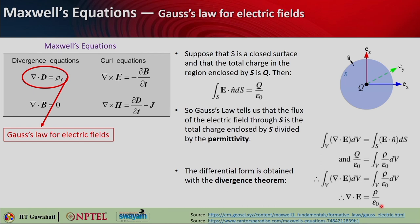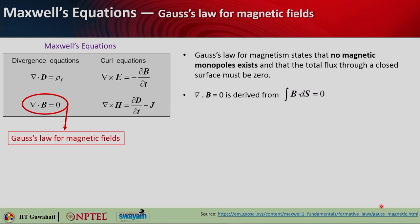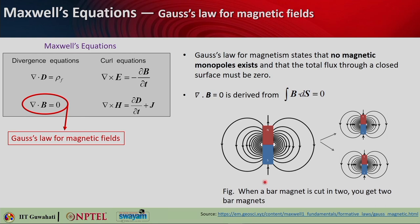Gauss law for magnetism states that no magnetic monopole exists, so the total flux through any closed surface must be zero: del·B = 0. The integral of B·dS over a closed surface equals zero. If you break a bar magnet, even the smallest fragment still has both north and south poles — there is no isolated magnetic monopole.